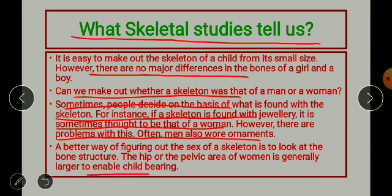A better way of figuring out the sex of a skeleton is to look at the bone structure. The pelvic area — the hip or lower area — of a woman is generally larger to enable child bearing.